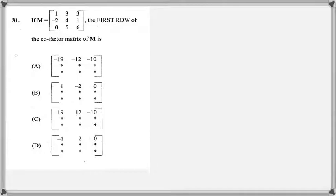M is equal to this matrix here, the first row of the cofactor matrix of M is which one of these. That's what they're asking us. So what we have to understand is how do we find each one of these cofactors.